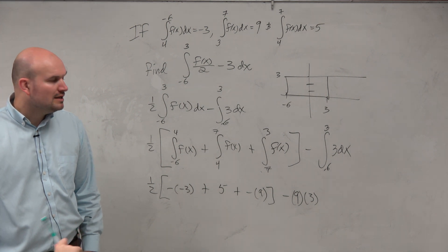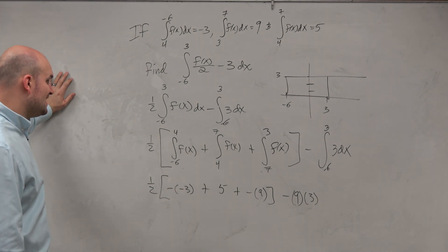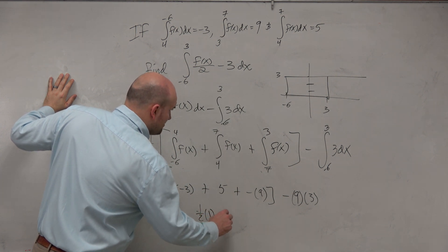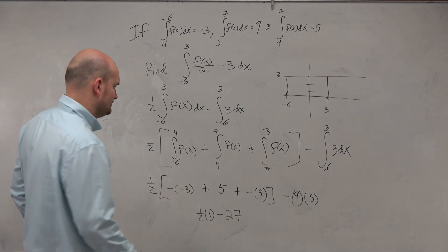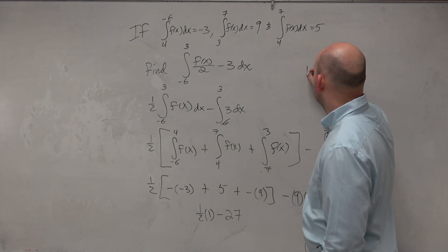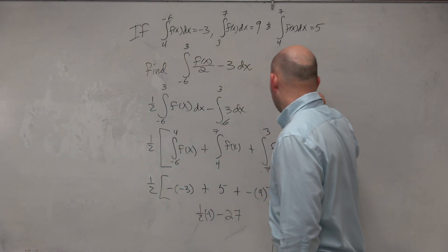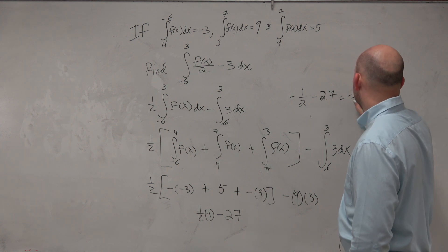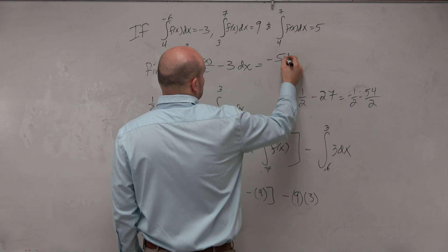Now let's simplify this up. I have 5 minus 9 is negative 4. Plus 3 is going to give me 1. So I have 1 half times 1 and then minus 27. That's a negative 1 half minus 27, which is the same thing as negative 1 half minus 54 over 2. That's going to be negative 55 over 2.